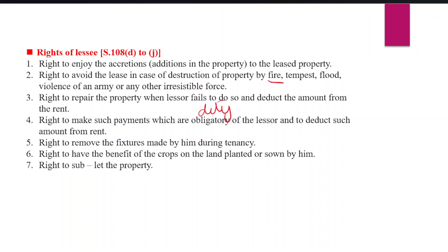When the lease is terminated, the lessee can remove those fixtures and take them back. Sixth is the right to have the benefit of crops — whatever crops the lessee has planted or sown on the leased land, the lessee can take the benefit of those crops.